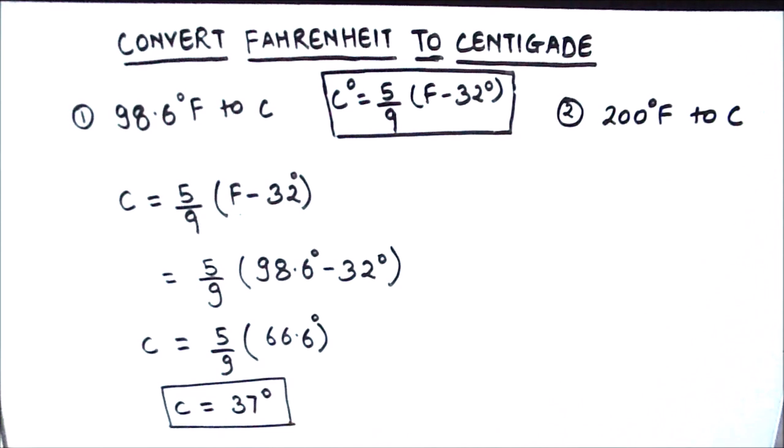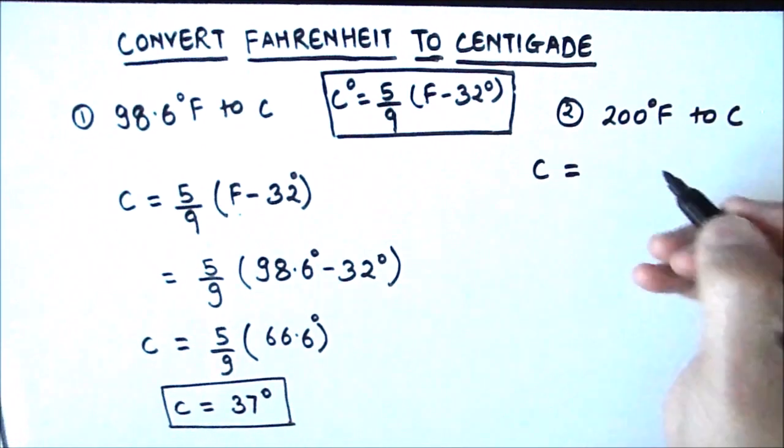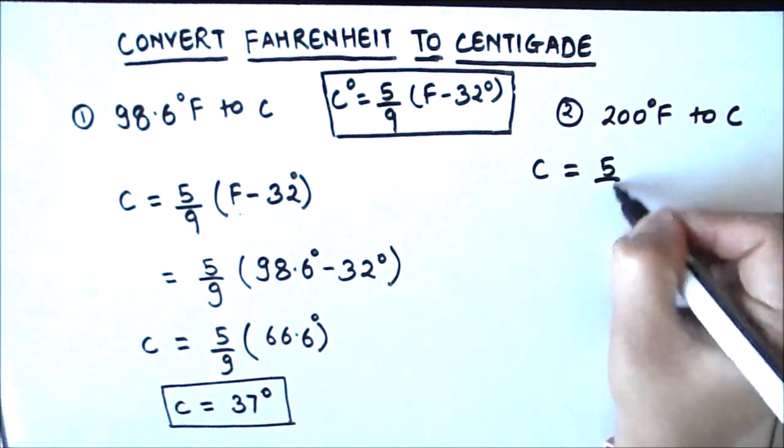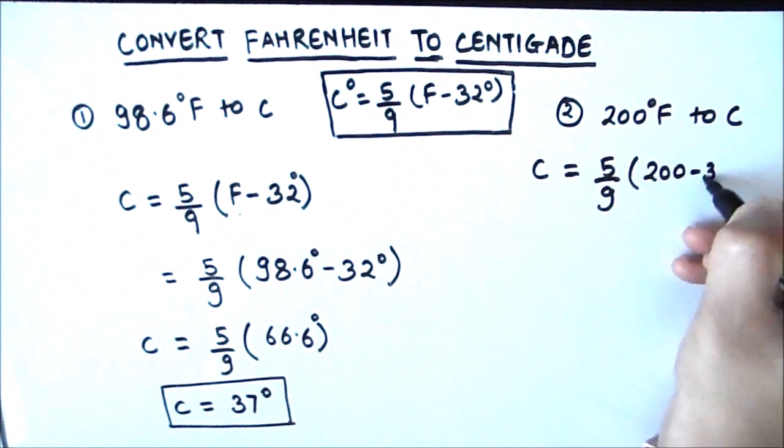Now let's move on to our next example where we have 200 degree Fahrenheit and we need to find out how much it is in centigrade. So 5 upon 9, 200 minus 32. 200 minus 32 is 168.